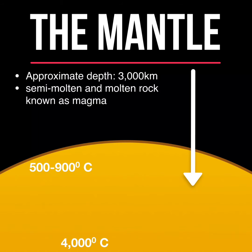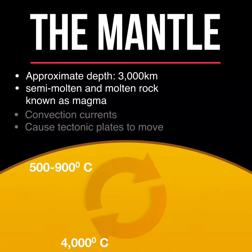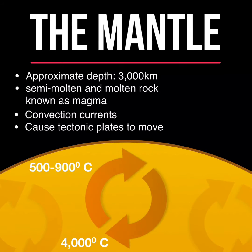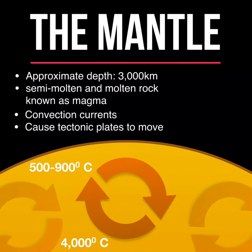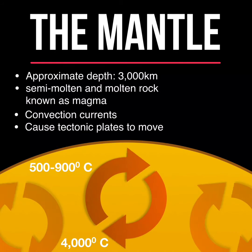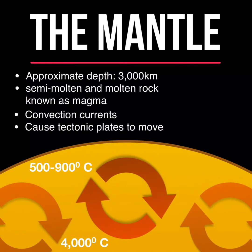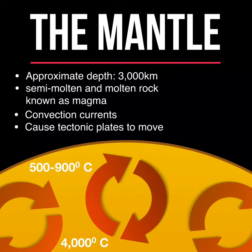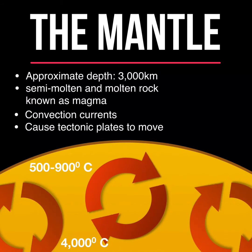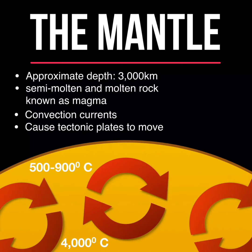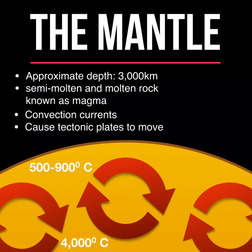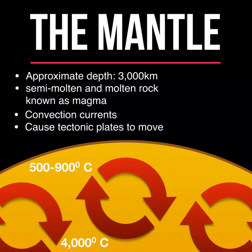The mantle is made of semi-molten rock and molten rock known as magma. Temperatures in the mantle vary between 500 and 900 degrees Celsius at the surface, and 4,000 degrees Celsius closer to the core. Convection currents in the mantle cause tectonic plates to move.